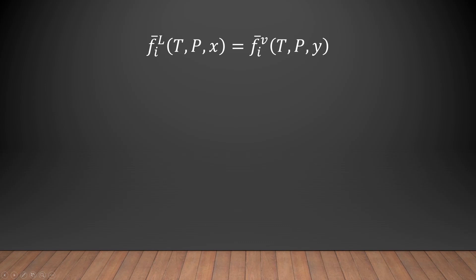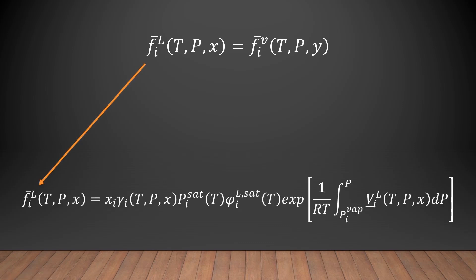From here, we can expand both sides of the equation, starting with the liquid phase mixture fugacity. The liquid phase mixture fugacity of component I is equal to the product of the liquid mole fraction, the activity coefficient, the saturation pressure, the fugacity coefficient of the liquid at saturation, and the Poynting correction.